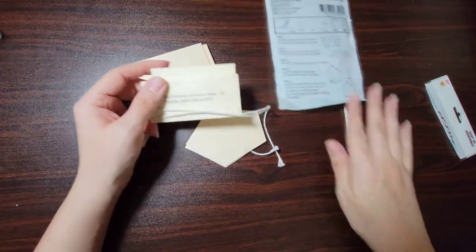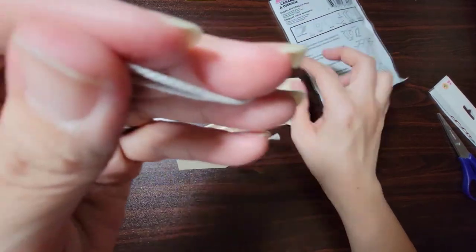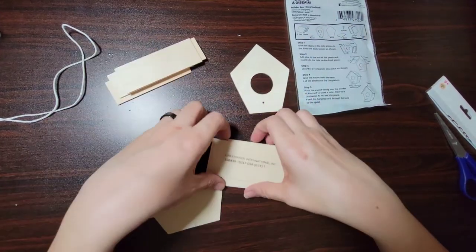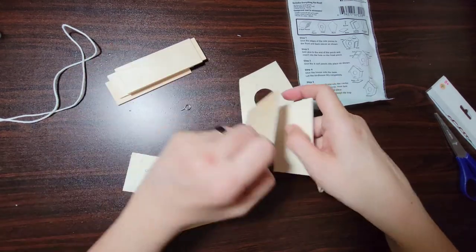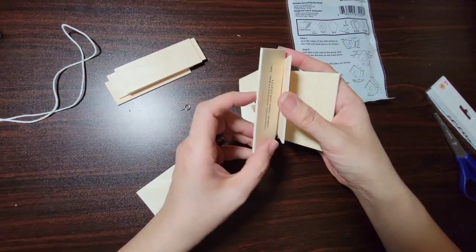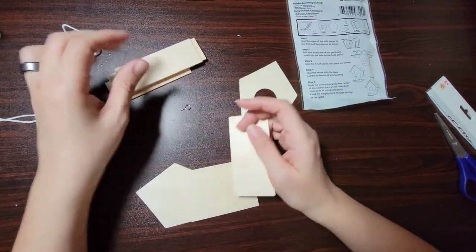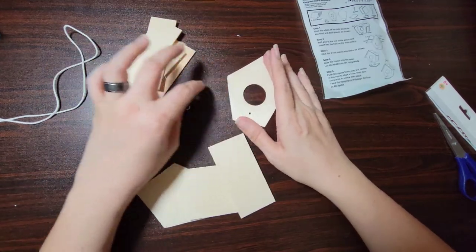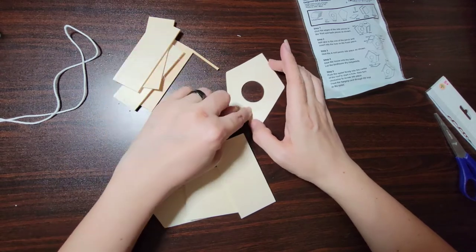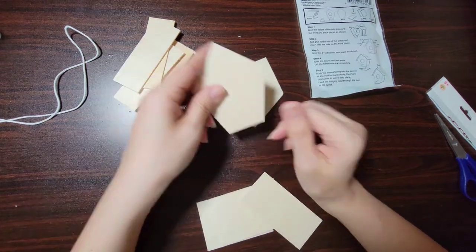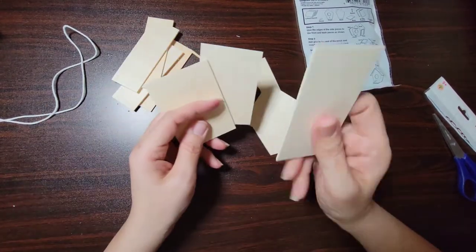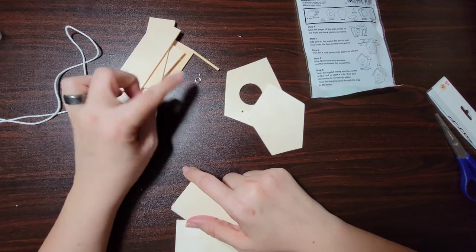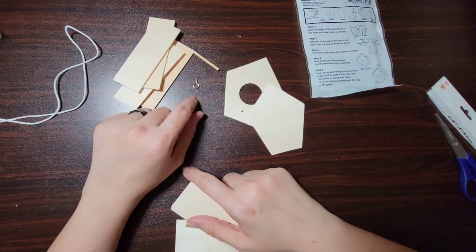So the instructions are on the back, here's our string. Okay, so now I believe these are the sides and this is the bottom. Yep, this is the base. These are the four roof tiles or roof pieces. This is what they call the perch. This is the front, this is the back, these are the sides, and the base here is your little eye hook or eyelet for your string to go through.